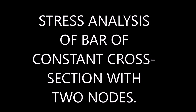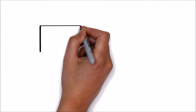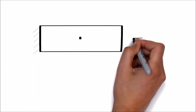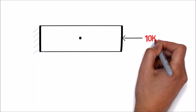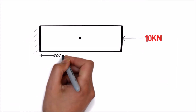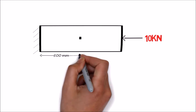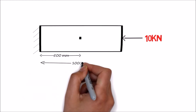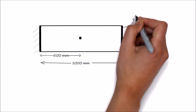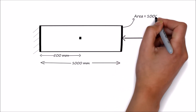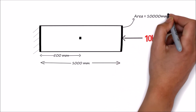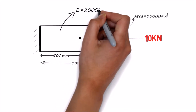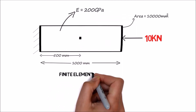Tonight we are going to draw a different element. Let us consider a bar which is fixed at one end and a compressive force of 10 kN is applied to the other end. We consider a mid node at a distance of 500 mm and the total length of the bar is 1000 mm. Area of the bar is 10,000 mm² and E is the Young's modulus.